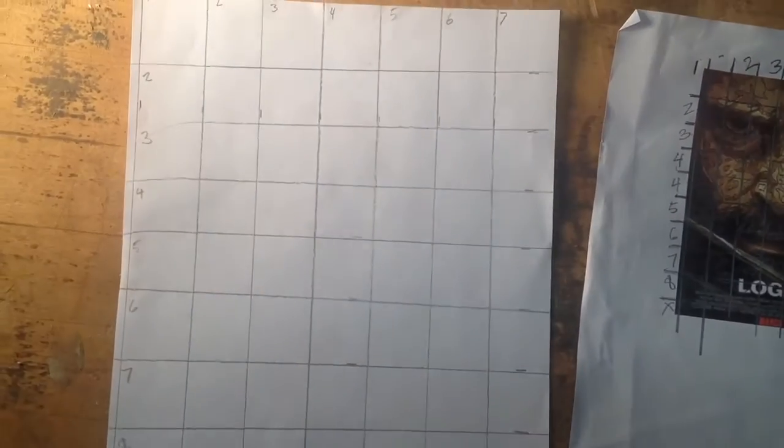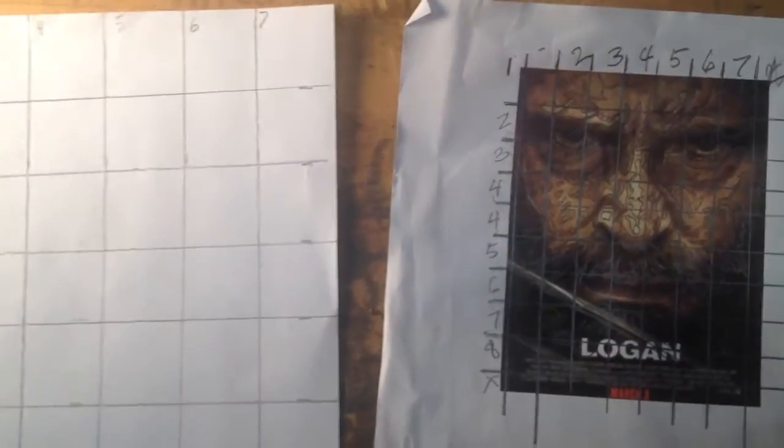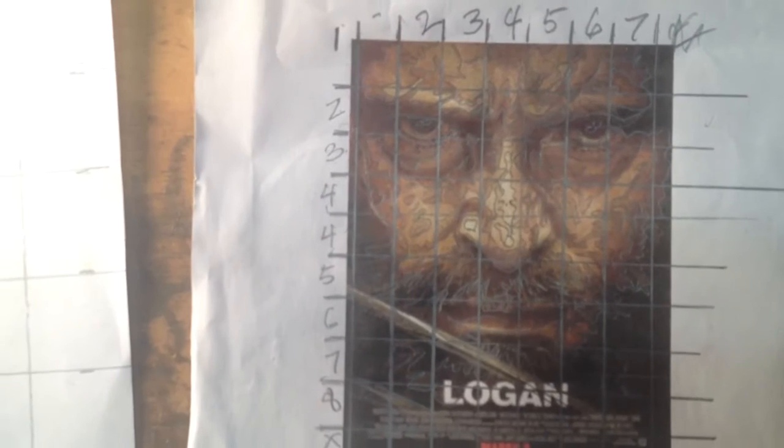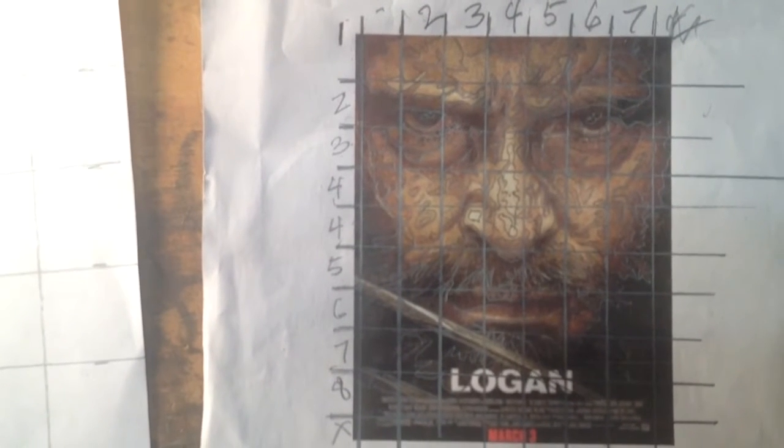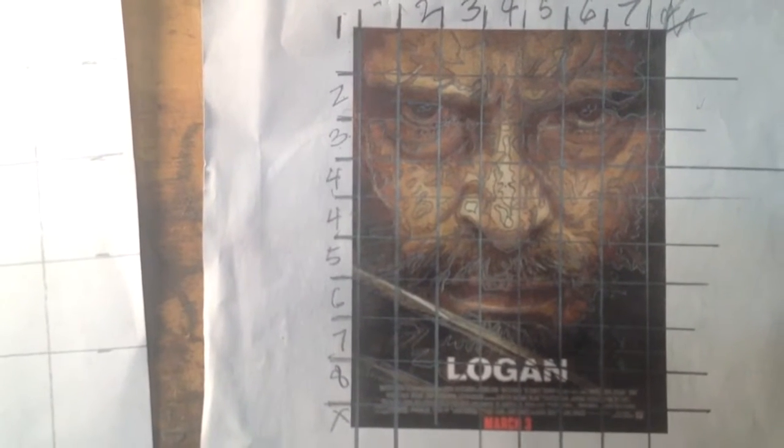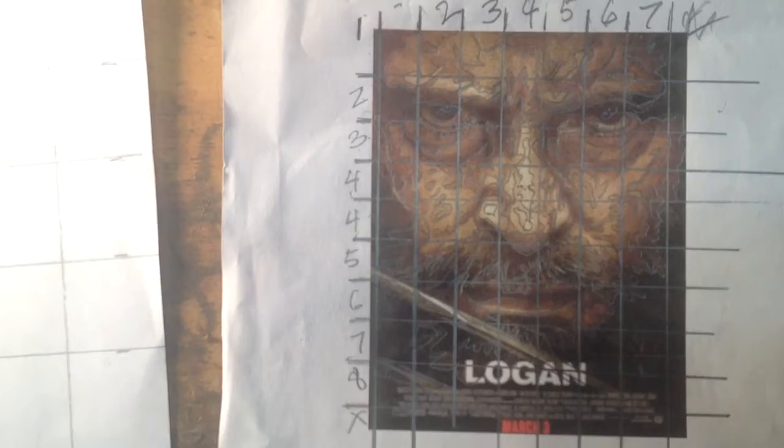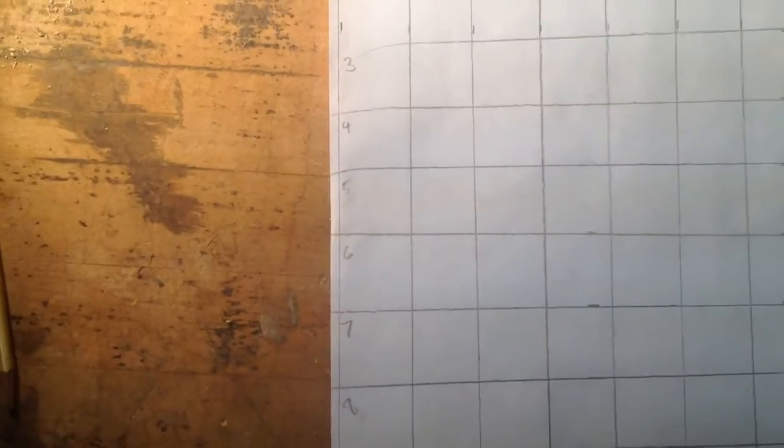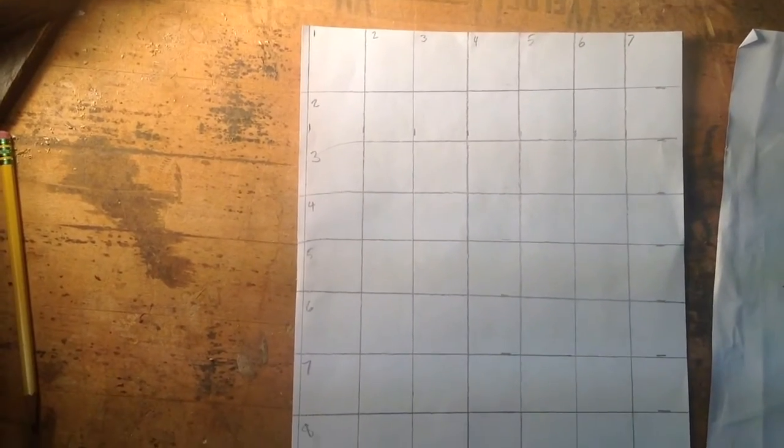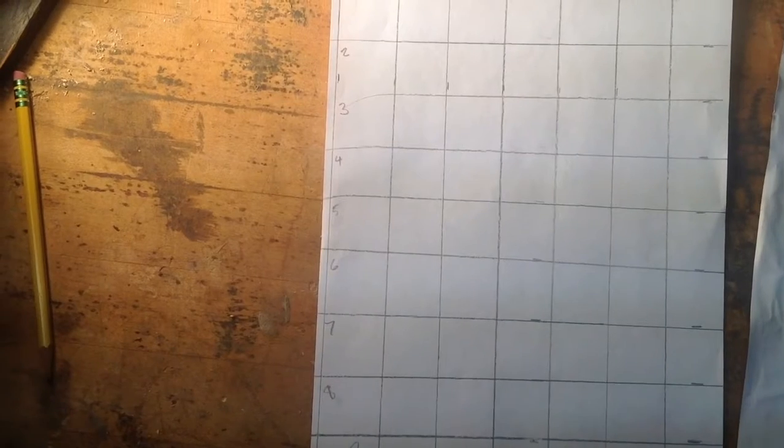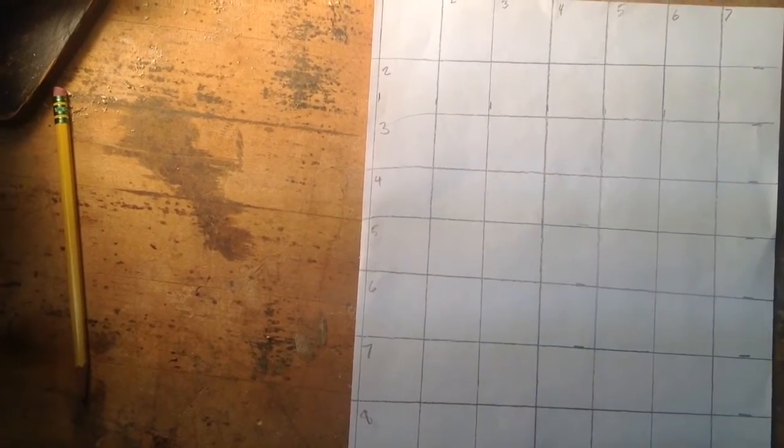You can see on day 1 we picked our photograph out. I picked this one and I did a grid on the photo. You can see it's numbered 1 through 7 along the top and 1 through 8 along the side down to the bottom. Then on day 2 we created a grid over here on this paper making it the same 1 through 7 on the top but larger squares and 1 through 8 down the side.